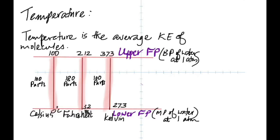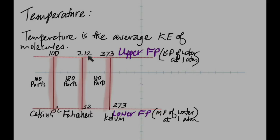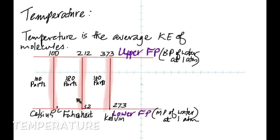On the Fahrenheit scale, 32 is the melting point of ice and 212 is the boiling point of water, so there are 180 equal parts. On the Celsius scale, the melting point of ice is zero degrees Celsius and the boiling point of water is 100 degrees Celsius, so there are 100 parts.